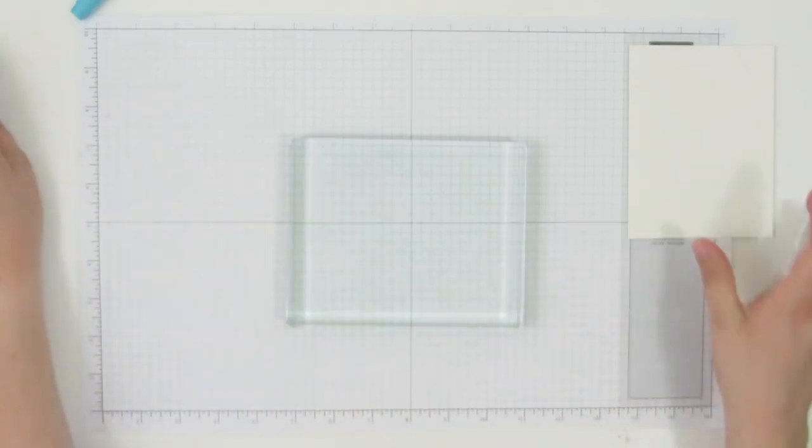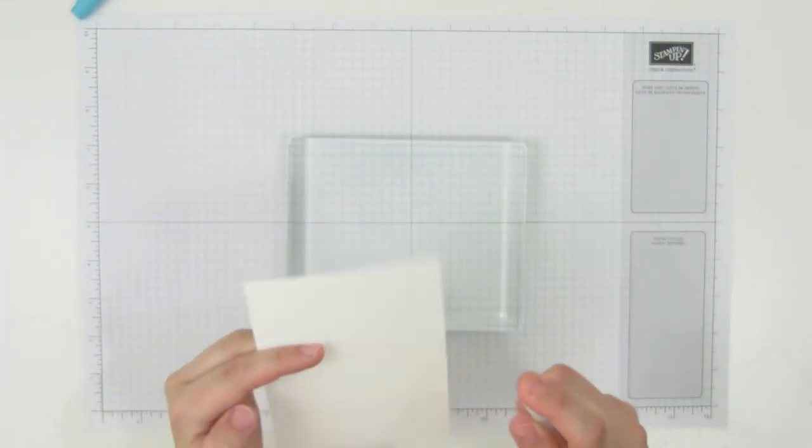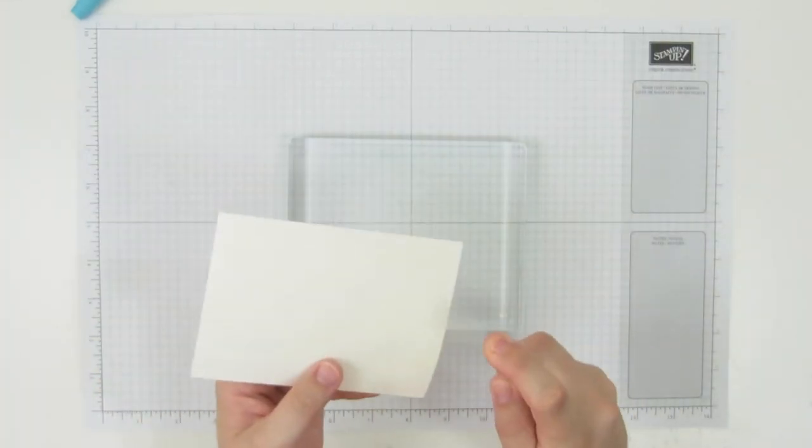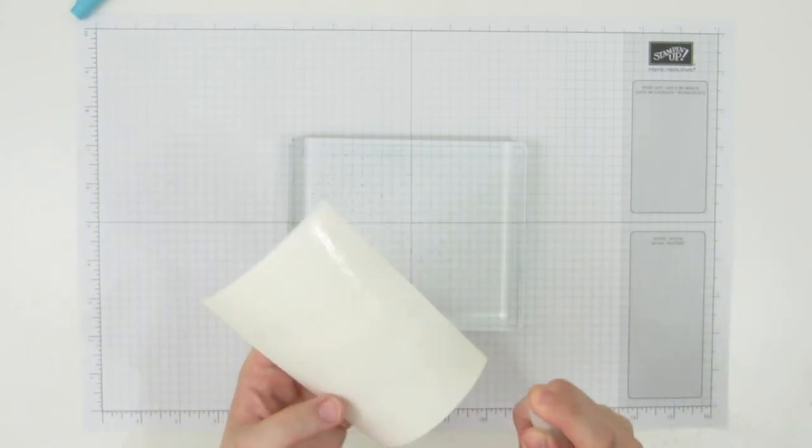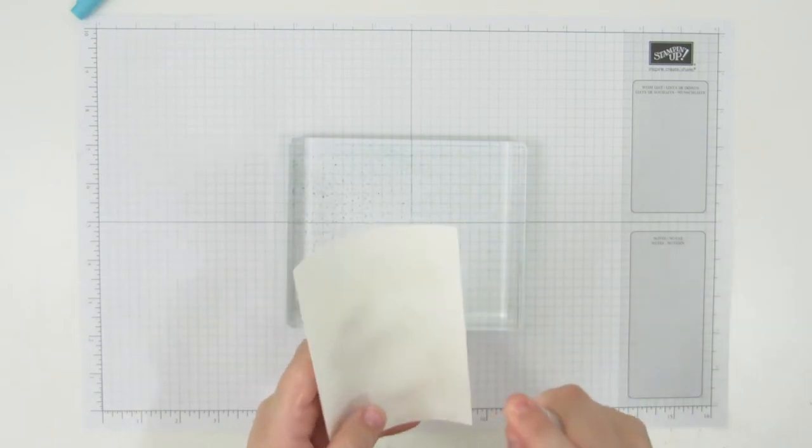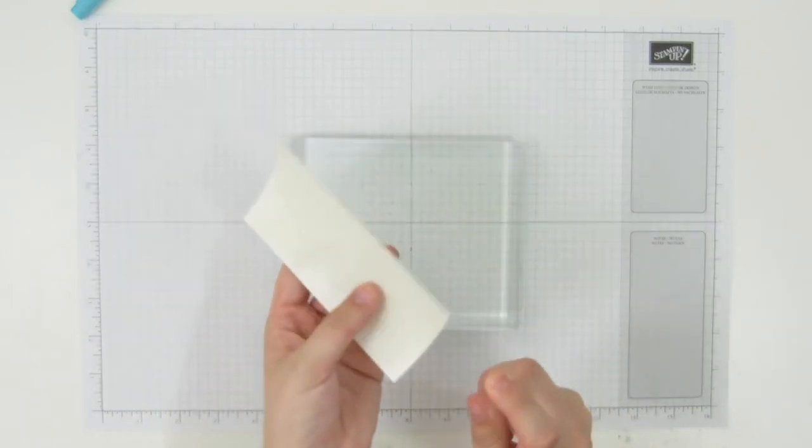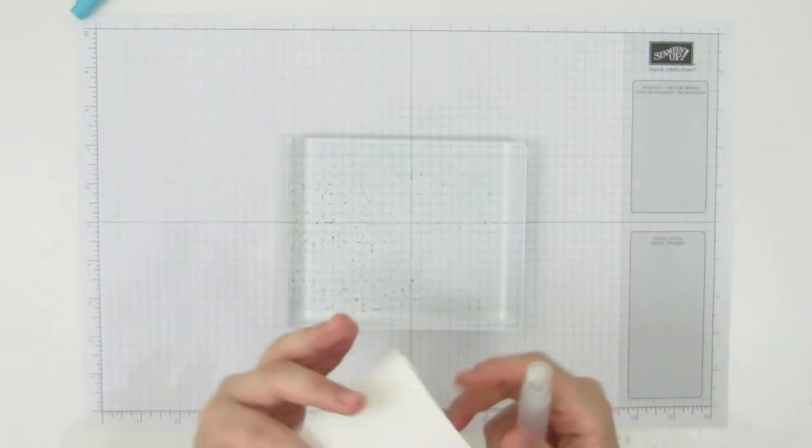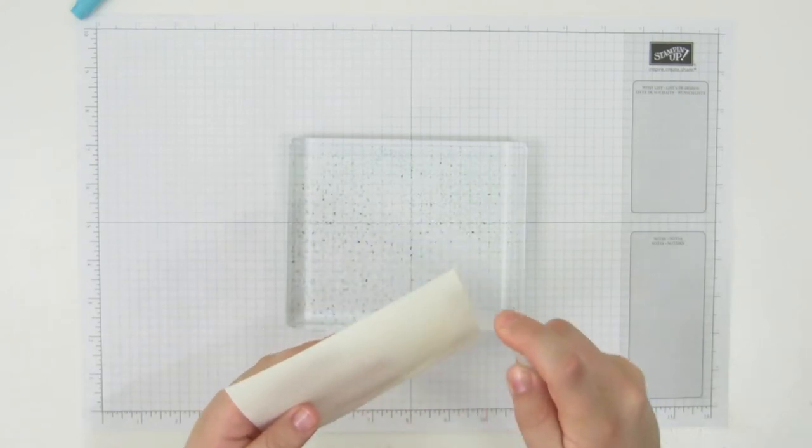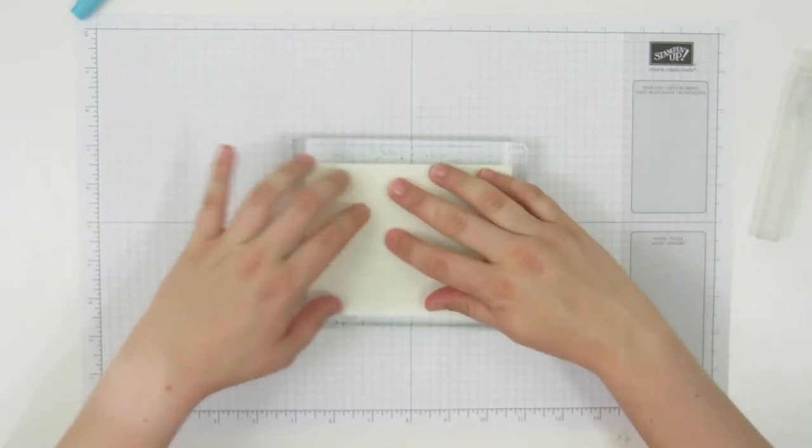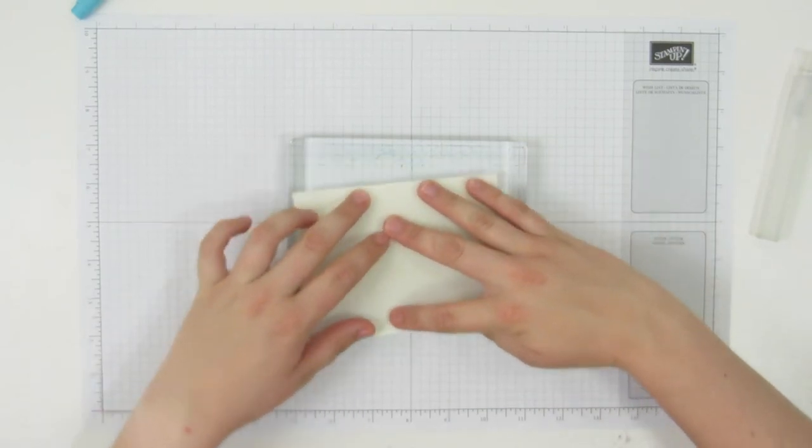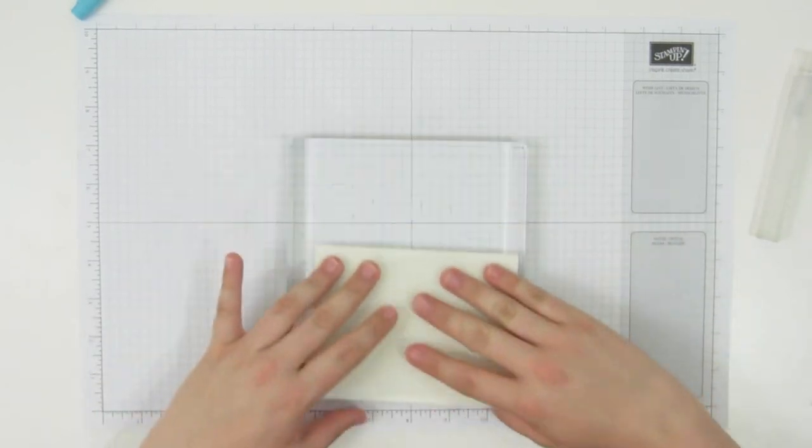Then I'm going to take my spritzer and thoroughly soak down my piece of watercolor paper. This is really important - you want to get this fairly soaked and you want to get some on your clear block as well. And then it's just laying it down on there and you can smoosh it around a bit.